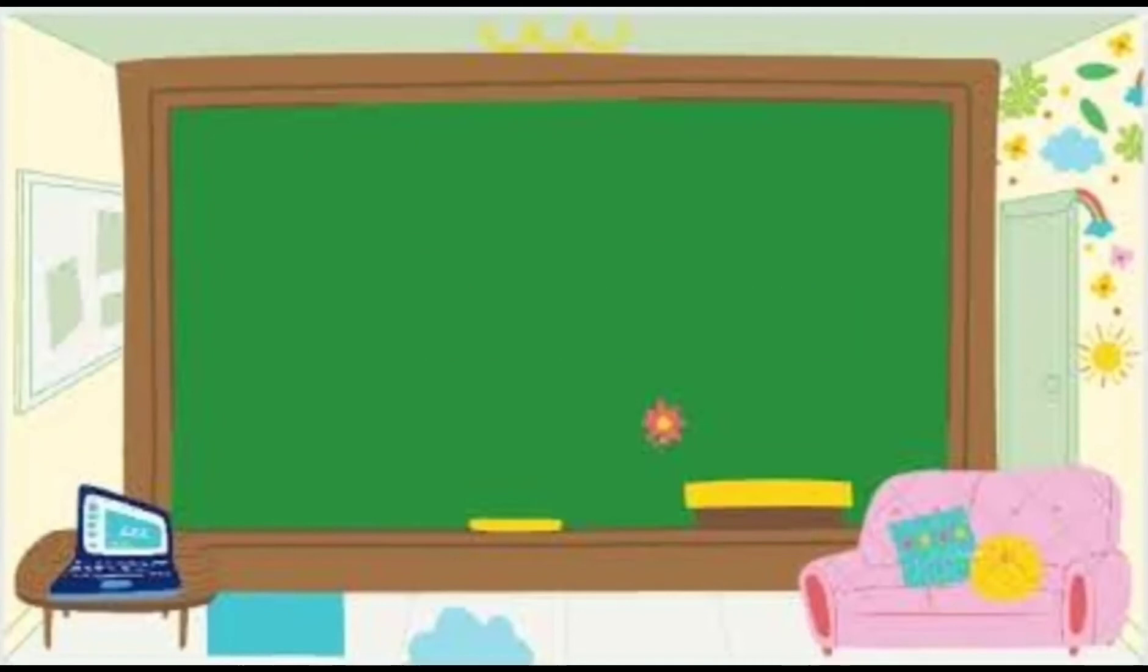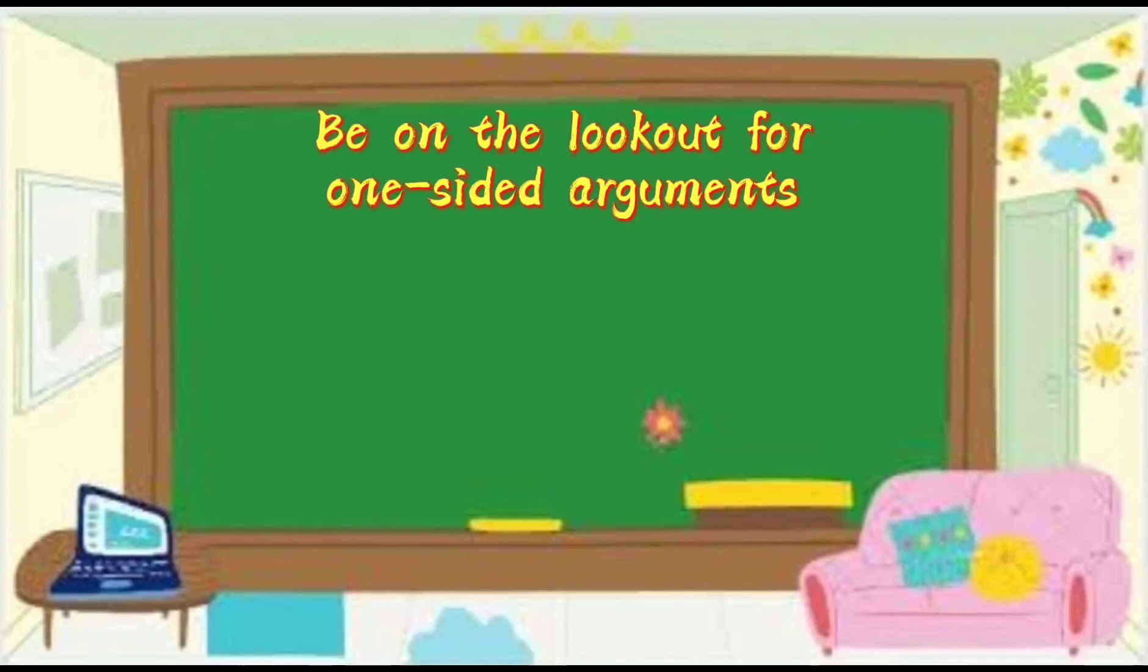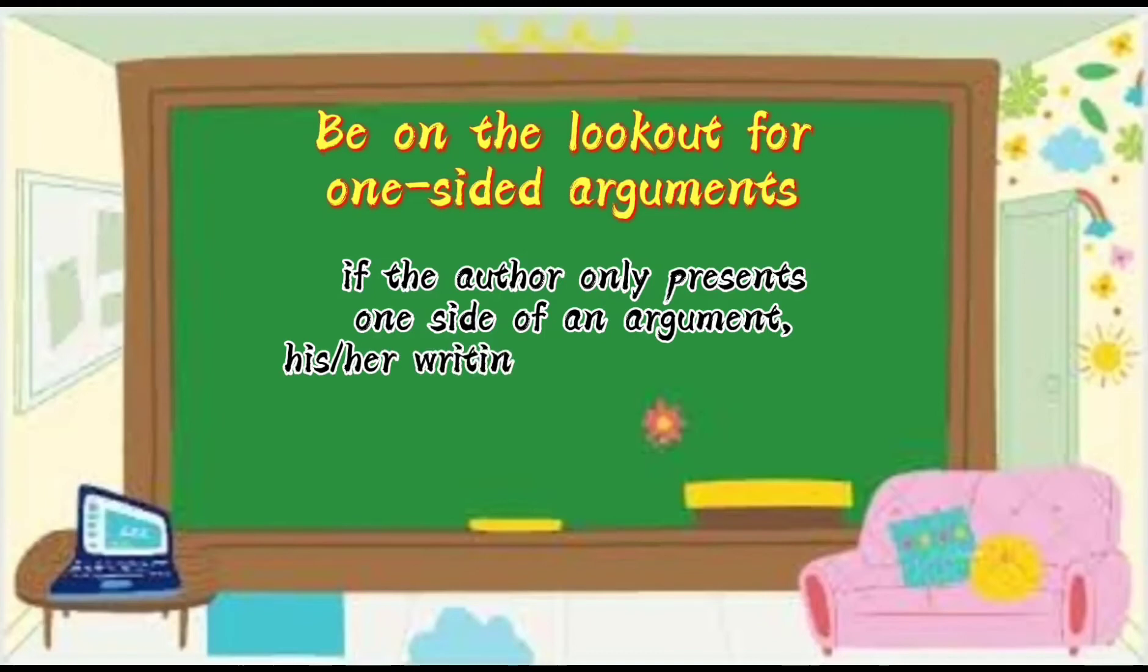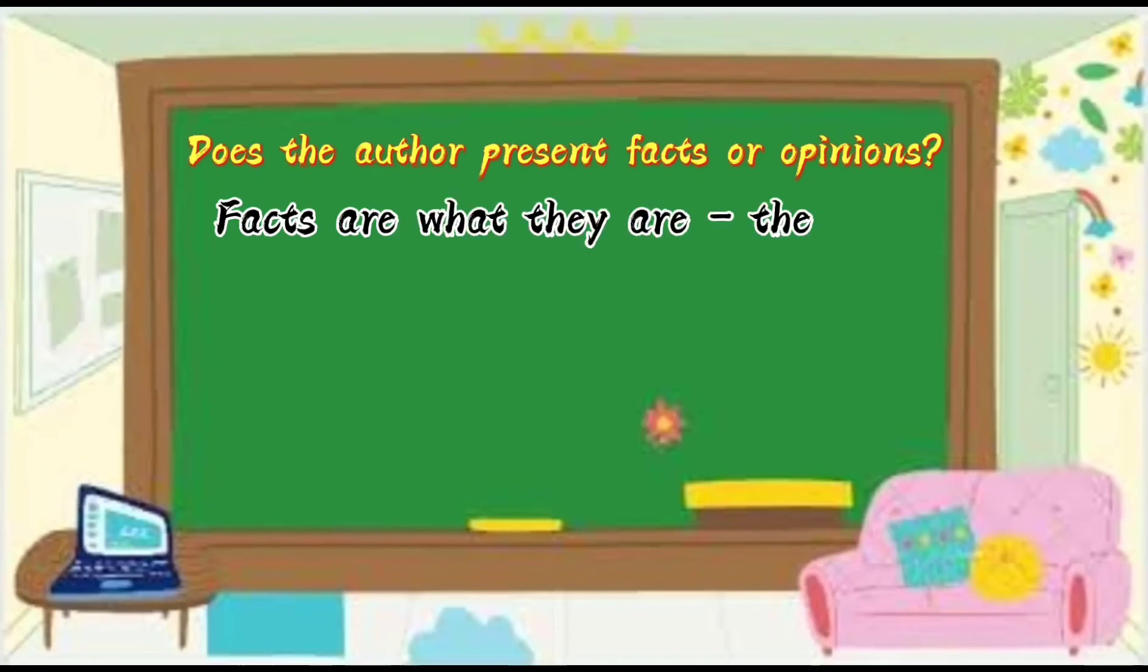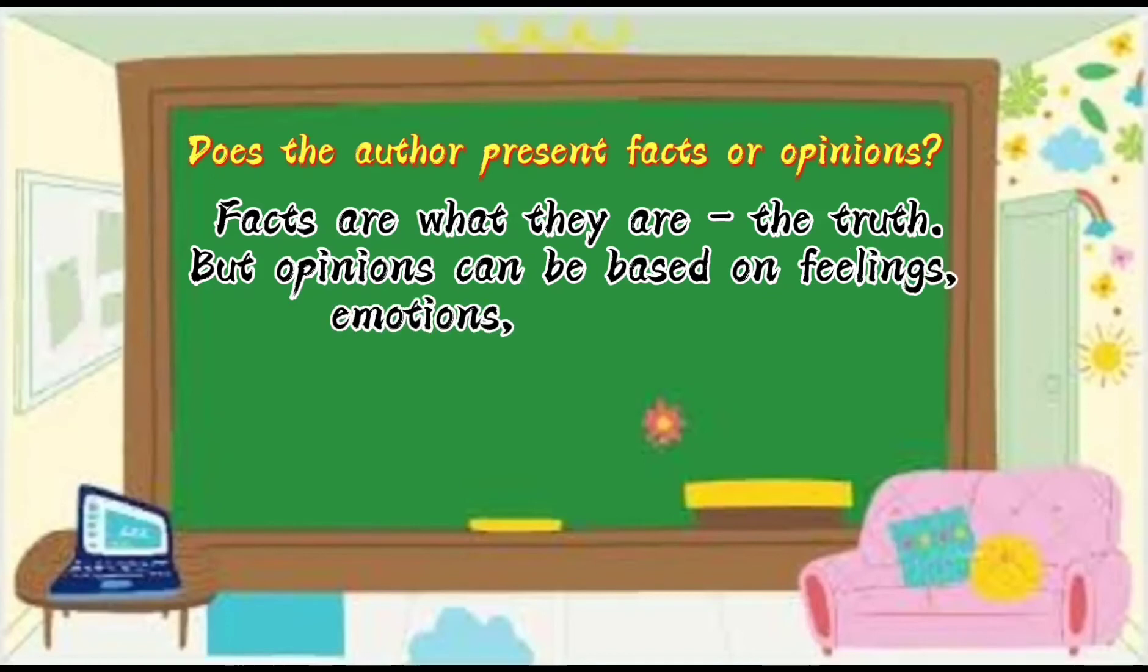Fourth is be on the lookout for one-sided arguments. If the author only presents one side of an argument, his or her writing is probably biased. The last one is does the author present facts or opinions? Facts are what they are, the truth. But opinions can be based on feelings, emotions, or prejudices, which aren't objective.